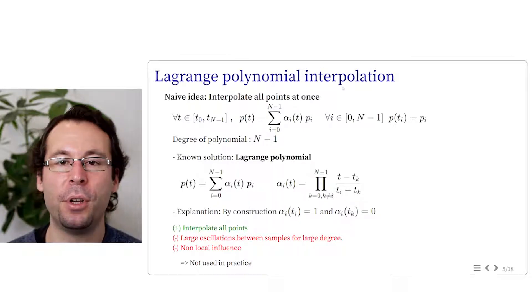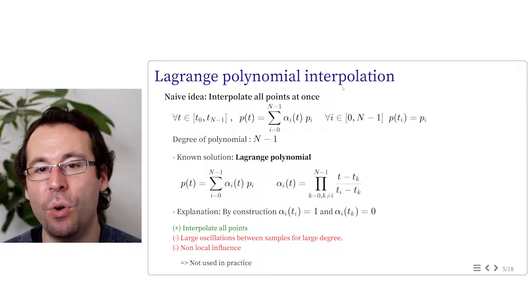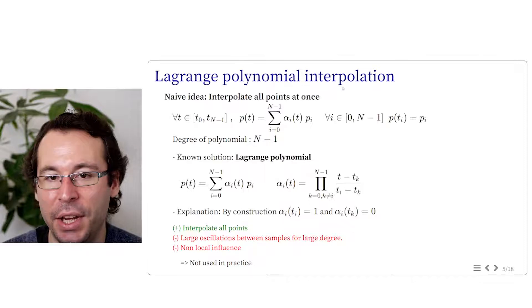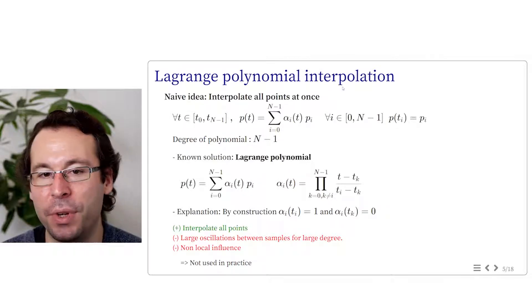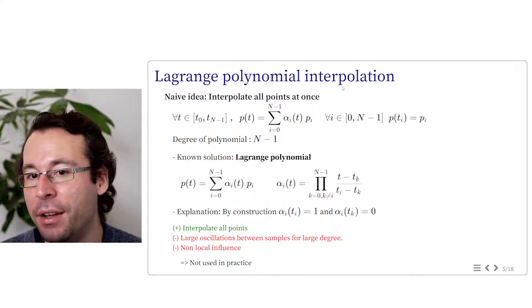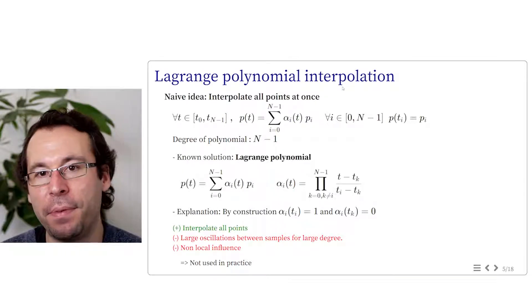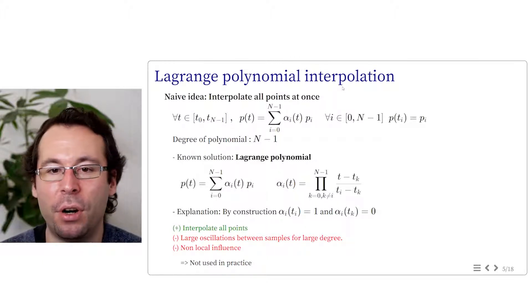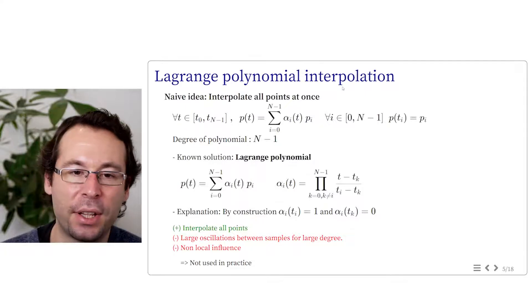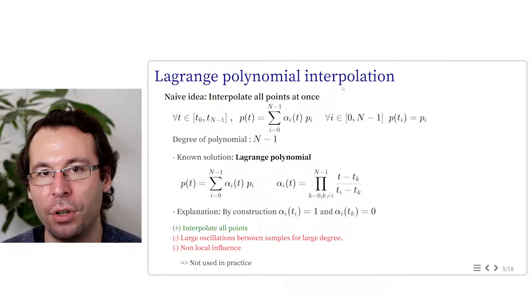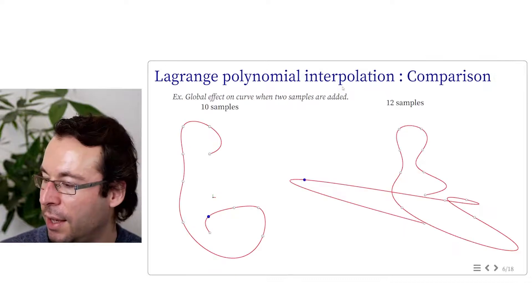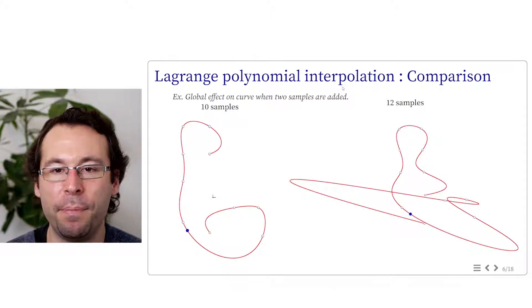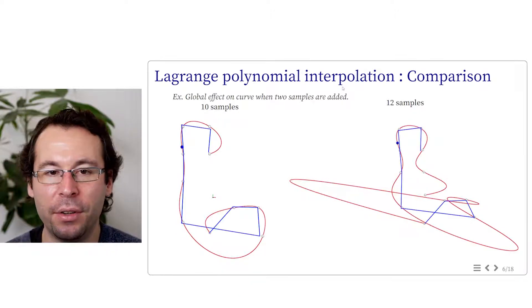Lagrange polynomial has the good property of interpolating all samples. But unfortunately, between the samples, it exhibits large oscillation when we use large degree. Large degree meaning typically 10 or more points, which is not much for keyframe animation. Also, the method has non-local influence, meaning that if a position or time is modified, the entire trajectory will be also globally modified.